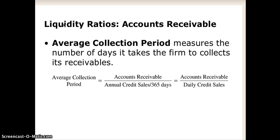Another liquidity ratio cited in the textbook is the average collection period. It basically asks: how many days does it take this company to collect its accounts receivables? Accounts receivables are monies owed to a company from its customers — for example, you shipped goods to someone and said they don't have to pay for 60 days; that's an accounts receivable. Most businesses have accounts receivables, but some don't — restaurants, for instance, typically deal in cash transactions and don't have many accounts receivables, though they might for a catered event.